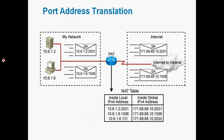Port Address Translation can otherwise be called many-to-one mapping — many private IP addresses can be mapped into a single public IP address, and the port number can also be changed. Here we can see in the inside network we use 10.6.1.2 and 10.6.1.6 — both are private IP addresses. These IP addresses pass through the router and are automatically translated into 171.69.68.10.